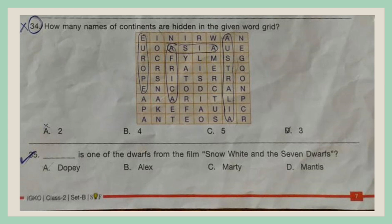Question 35. Dash is one of the dwarves from the film Snow White and the 7 Dwarves. A. Duffy, B. Alex, C. Marty, D. Mantis.